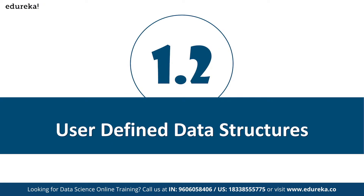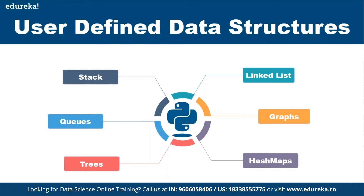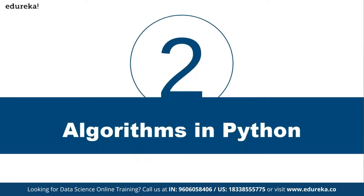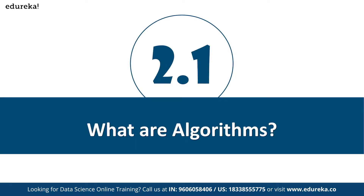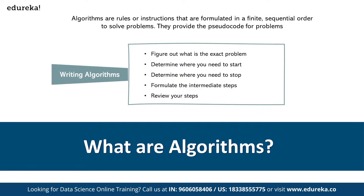Coming to user-defined data structures, you have stacks, queues, linked lists, graphs, trees, and hash maps. Now, what are algorithms? Rather than a textbook definition, I would say an algorithm is nothing but a set of steps on how to solve a problem. A program uses language instructions directly, whereas an algorithm is more of a free-form description of what steps you need to take in order to complete a particular task.